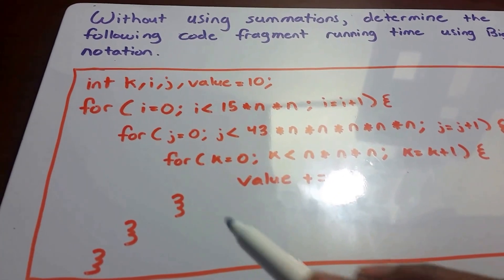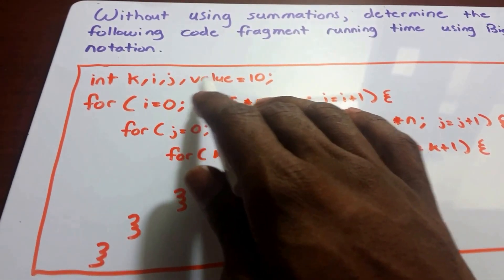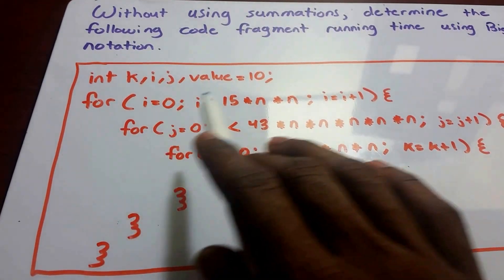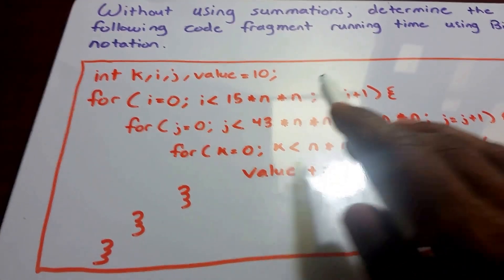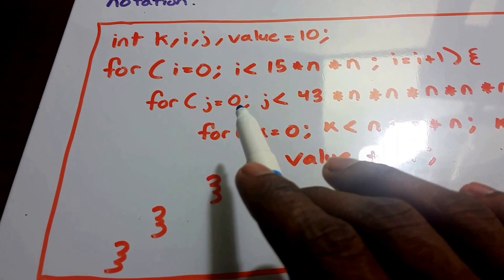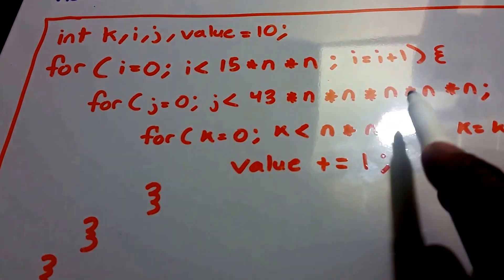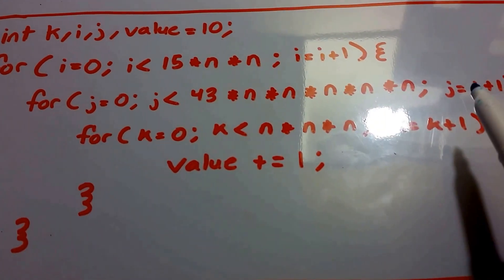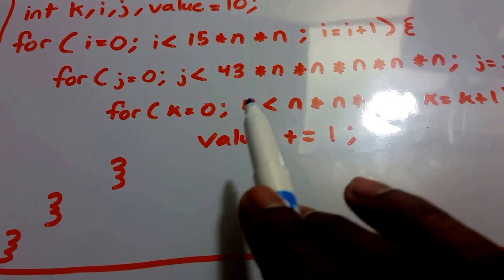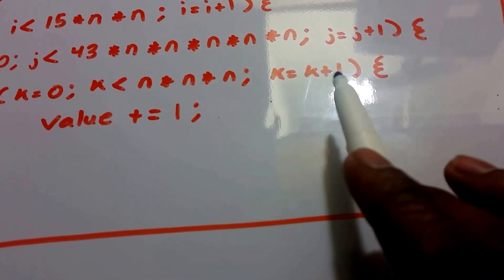So here in orange I have our code fragment. And then we have four variables here — integer variables: integer k, i, and j, and then value. And then we set value equal to 10. And then we have our first for loop, and it runs from i equals 0 while i is less than 15 times n times n, and then i increments by 1. And then within our second loop, we have j equals 0, and it runs while j is less than 43 times n to the fifth power, and then j increments by 1 each time. And then we have our third loop, which runs from k equals 0 while k is less than n times n times n, and then k increments by 1 each time.